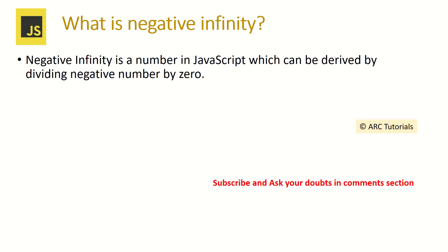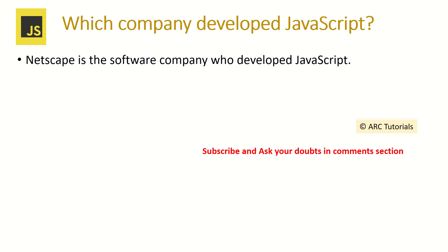Explain what is negative infinity. Negative infinity is a number in JavaScript which can be derived by dividing a negative number by zero. The next question is: which company developed JavaScript? Netscape was the original company which developed JavaScript, and now there is the ECMA standard through which all companies and all major browsers support it.